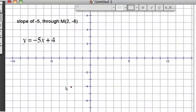Now it's a good idea to double-check your answers whenever you do something like this by looking on a graph. We're told that the line has a slope of negative 5 and passes through the point (2, -6).